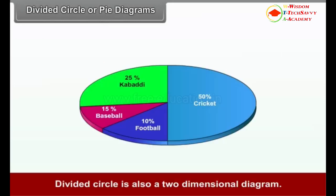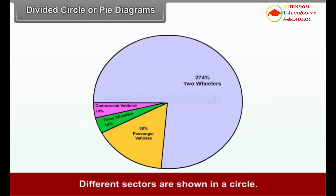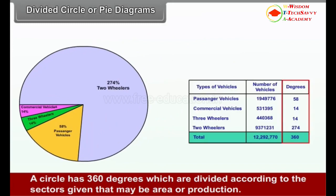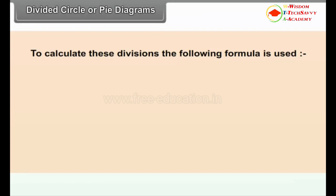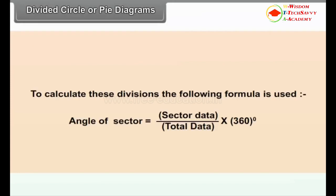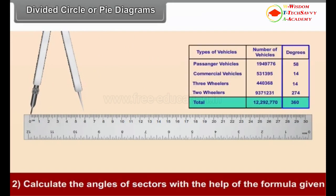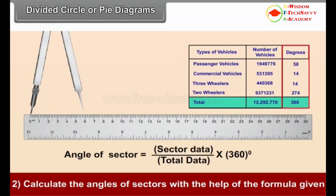9.6 Two-Dimensional Diagrams. Divided Circle: A divided circle is also a two-dimensional diagram. Different sectors are shown in a circle. A circle has 360 degrees which are divided according to the sectors — these may represent area or production. To calculate these divisions, the following formula is used: Angle of the sector = (sector data ÷ total data) × 360 degrees. Method: Select the size of the radius. Calculate the angles of sectors using the formula.